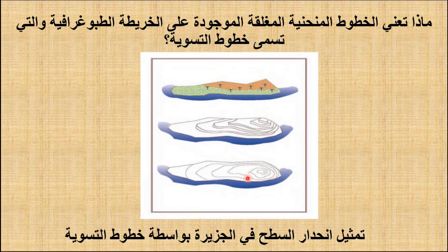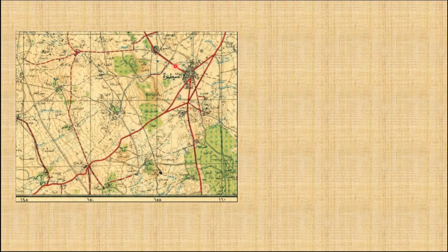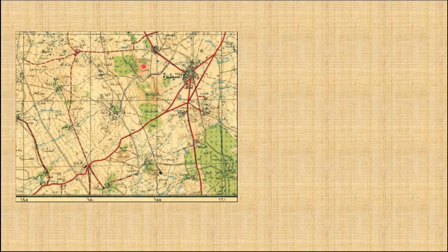خطوط التسوية تعكس تضاريس سطح الأرض على الخريطة الطبغرافية. لدينا هنا الخريطة الطبغرافية لمدينة القنيطرة. ونلاحظ في هذه المنطقة أن خطوط التسوية تتقارب من بعضها مما يعني وجود مرتفع جبلي أو وجود انهدام ومنخفض بسطح الأرض.